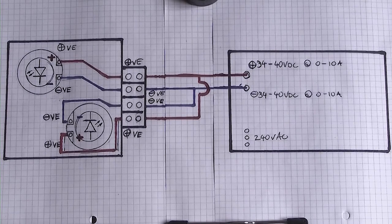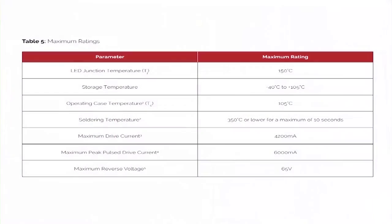While we're performing these sort of tests, we need to pay attention to the maximum ratings. As you can see there, we're safe up to about 150 degrees C temporarily on the cob. And a maximum drive current of 4200 milliamps, about 65 volts.